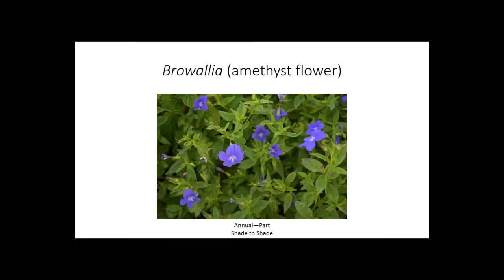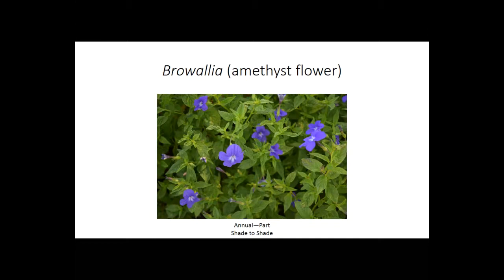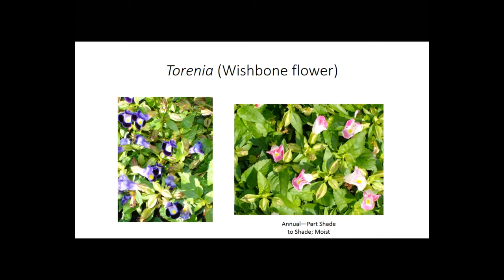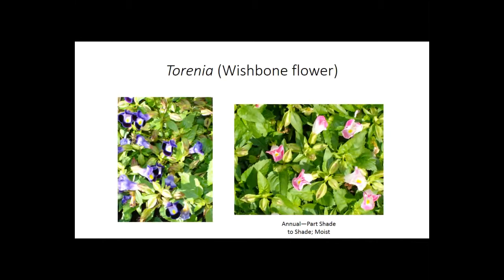Switching to flowering plants, browallia — also called amethyst flower — can inject some purple into your landscape and is underutilized. It will take part shade to even deep shade, so it's fun to plant alongside hostas and other perennials. Torenia, or wishbone flower, is one of my favorites. I buy the ground-cover types in four or six packs and plant them like people would use standard impatiens — a ton of them to create a colorful ground cover. It takes part shade to pretty deep shade but needs evenly moist soil.